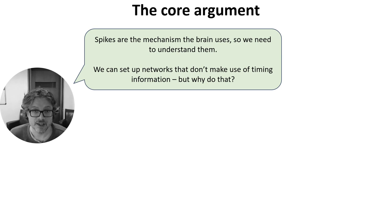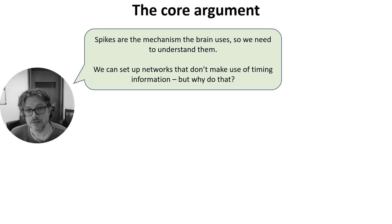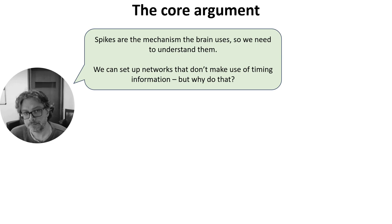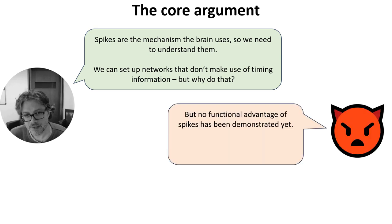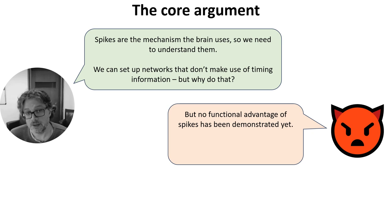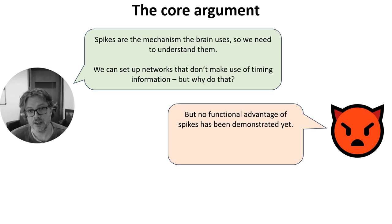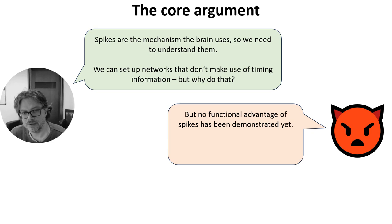But why would the brain actively throw away a potentially useful source of computational richness? My take is that if you want to say that the brain only uses rates, it's on you to show that using spike timing is actively harmful in some way, so that it's worth the effort to discard that information. But there's a counter-argument to that, which I'm representing here by this totally neutral choice of emoji.